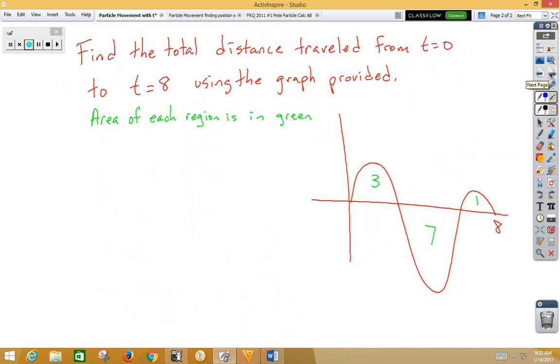In our next example, we have find the total distance traveled from t = 0 to t = 8 using the graph provided. And in this particular graph, we have the area of each region is in green. Looks like I left off the v(t) and the t, so let's get those in there. And nobody noticed that.